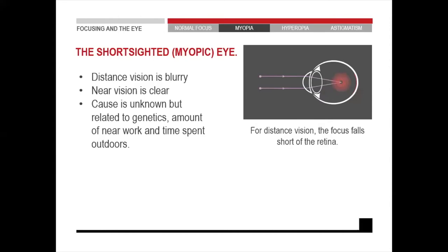Here are some tips on how to remember myopia. Myopia is when you can see clearly near, but you cannot see far. If you look at the word myopia, you will see the first two letters are 'my' — so I can see myself up close, but I cannot see far.